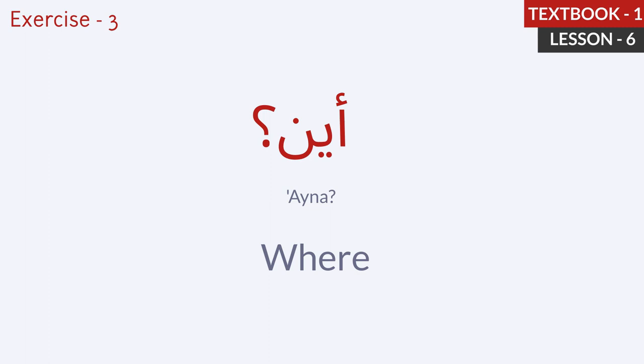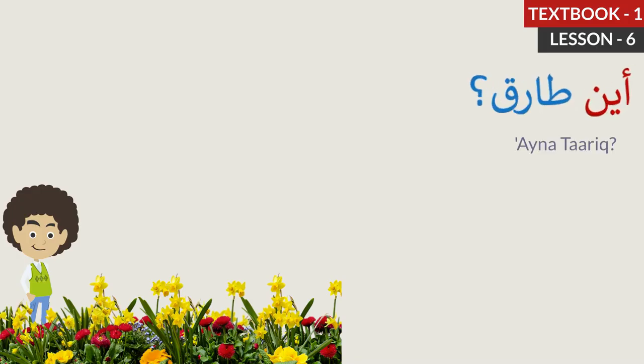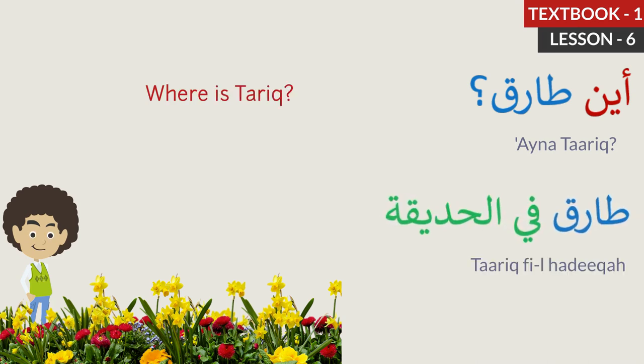The first one. Aina Tarek? Where is Tarek? Tarek Philhadika. Tarek is in the garden. Let's repeat: Aina Tarek? Where is Tarek? Tarek Philhadika. Tarek is in the garden.